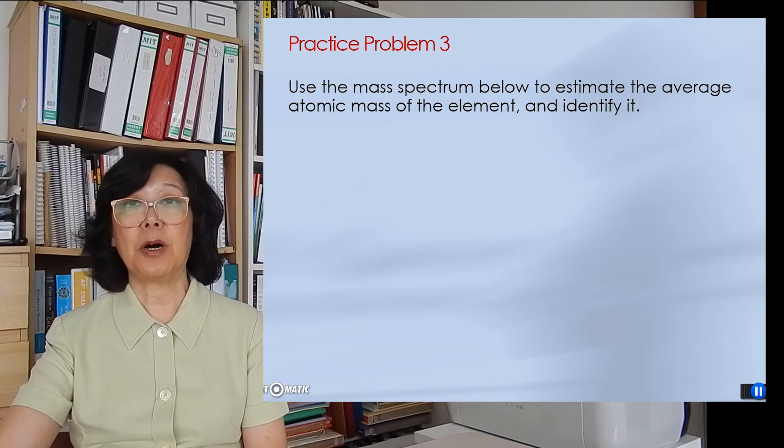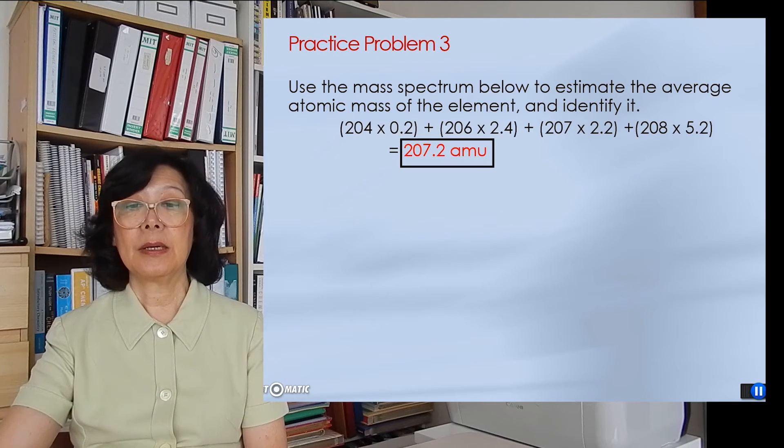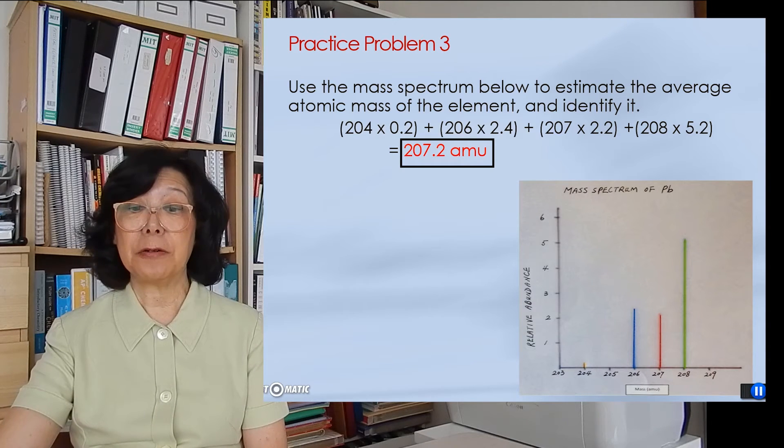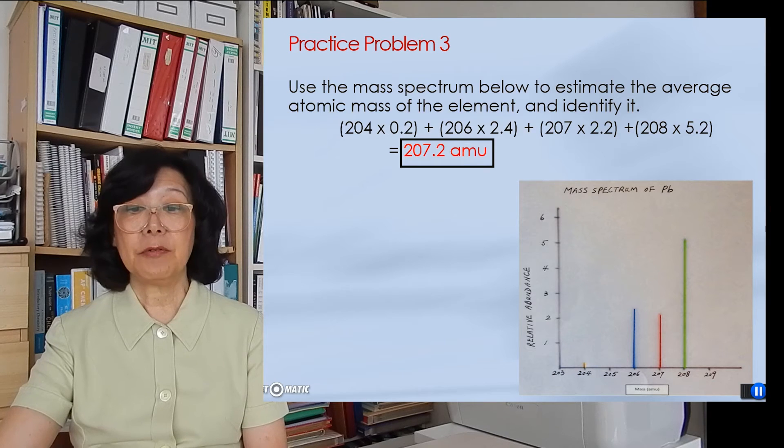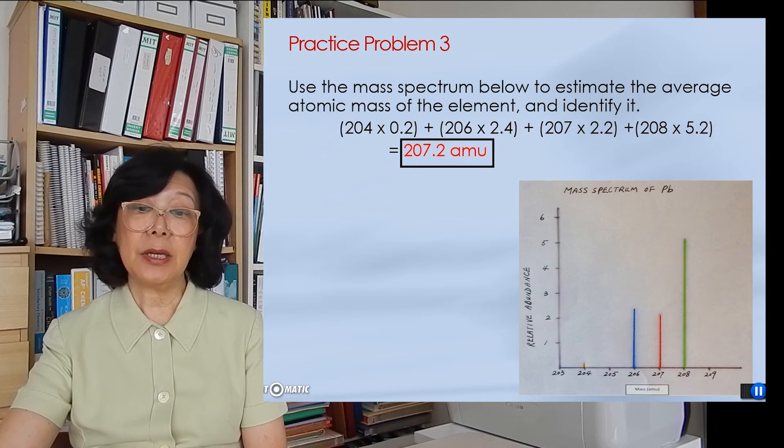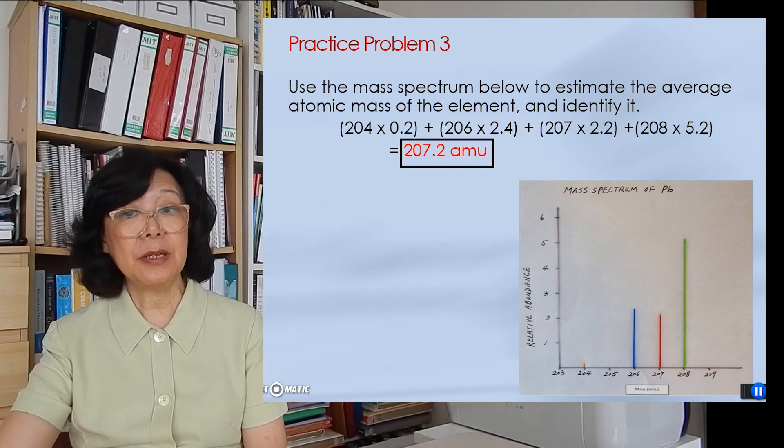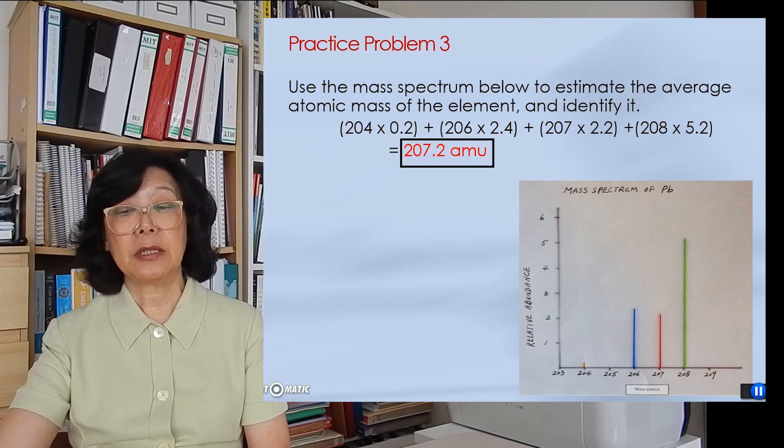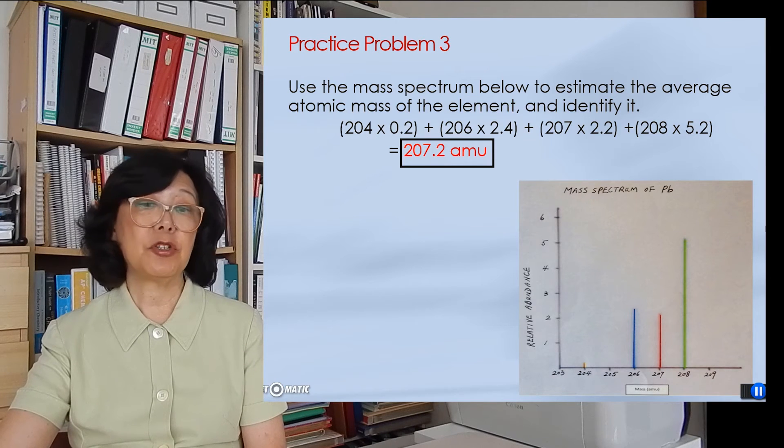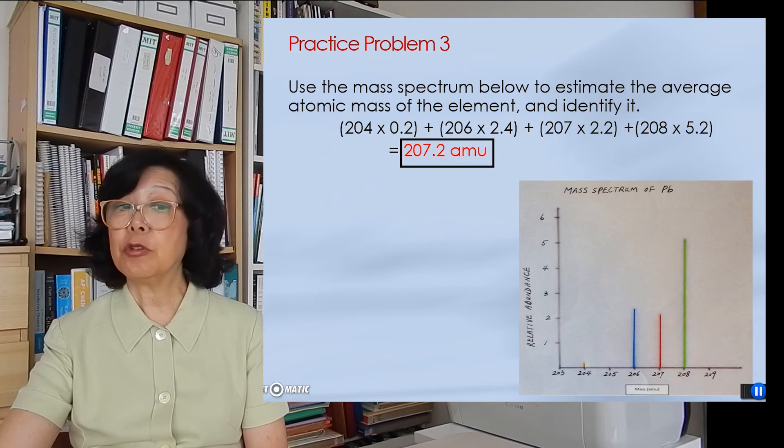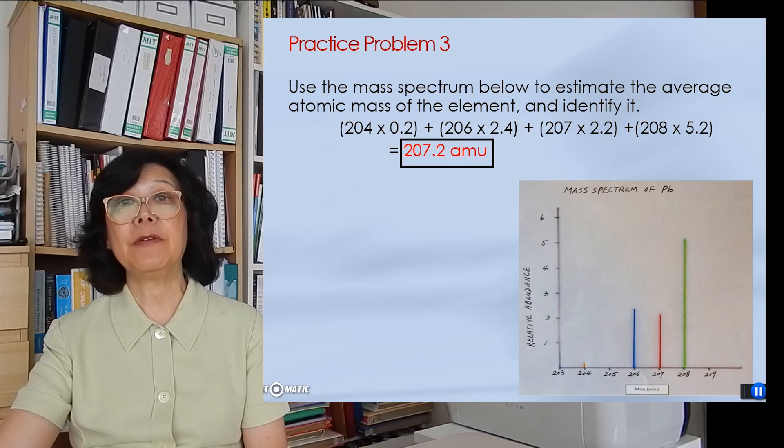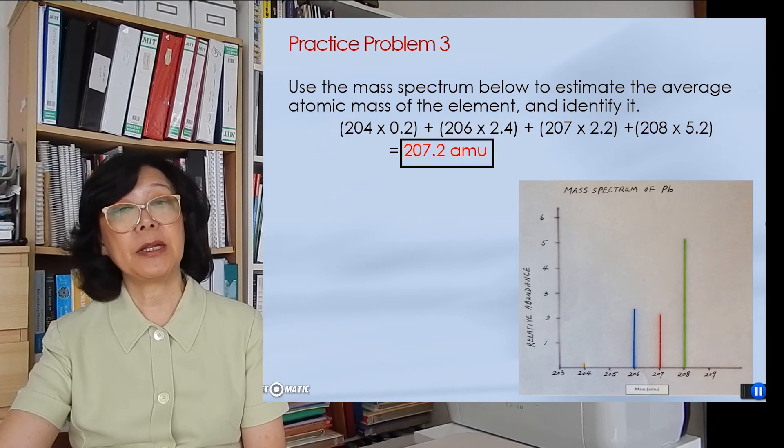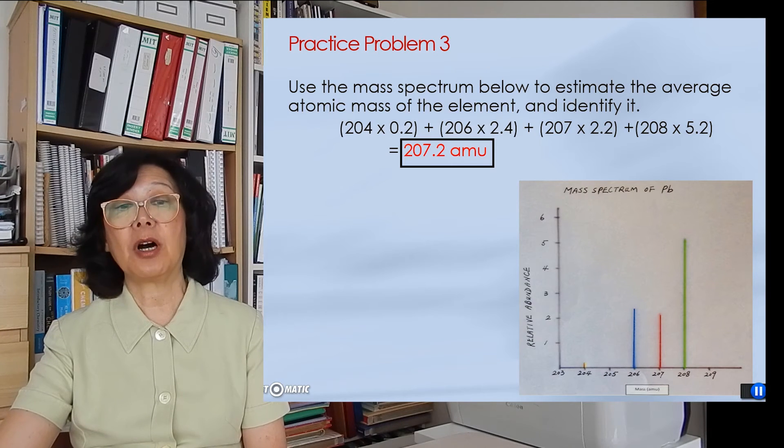The final problem deals with a spectrum with four peaks: the yellow, the blue, the red, and the green. We are asked to calculate the average atomic mass using this mass data, and then identify the unknown element. So we take the peak height of each peak, which is recorded as 0.2, 2.4, 2.2, and 5.2 units on the y-axis, respectively, and multiply it by the atomic mass unit of 204, 206, 207, 208, respectively.